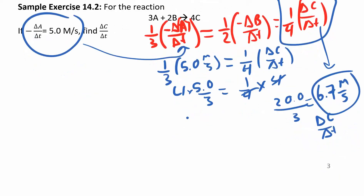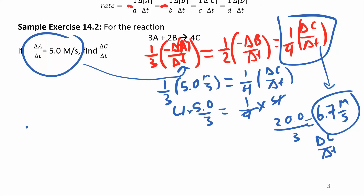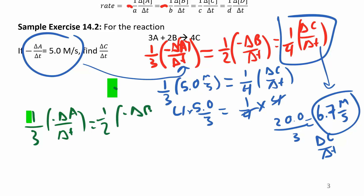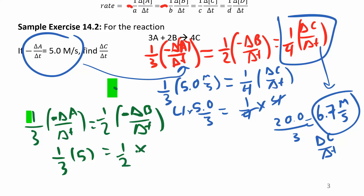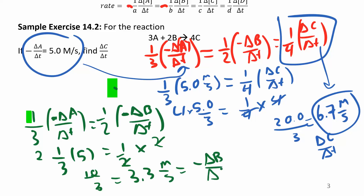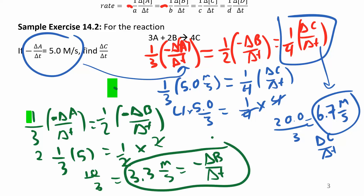You can do this for B as well. Setting up one third of change in A over change in time equals one half of change in B over change in time — notice both are negative, and we're looking for negative dB/dt. This is 5, so one third of 5 equals one half of what we're looking for. Don't worry about that negative sign — it's just to make the overall rate positive. We end up with 10 thirds, which is about 3.3 molar per second for the negative change in B over change in time. If you know one rate, you know them all.